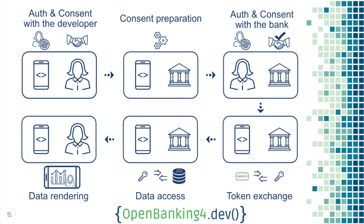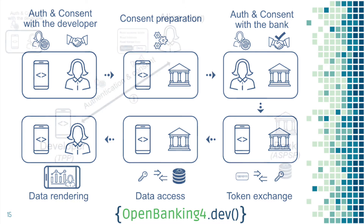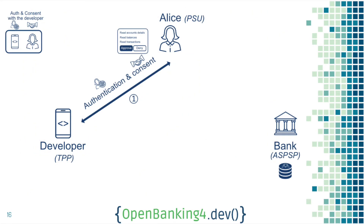Let's see all six steps in more detail. We'll concentrate mainly on the consent preparation, because that's the most challenging part for developers. Step one is authenticating Alice and presenting a consent page, making sure Alice understands what she's doing and what kind of information you want — here we want the account details, the balance, and the transactions.